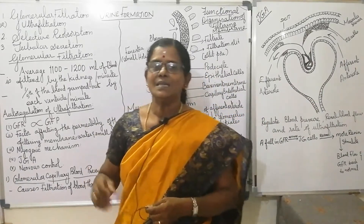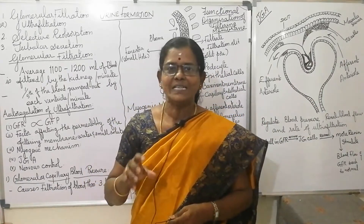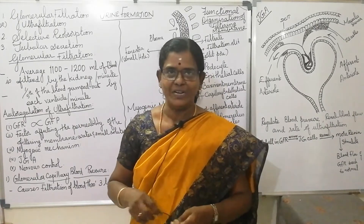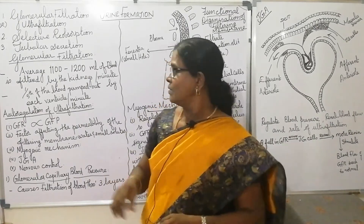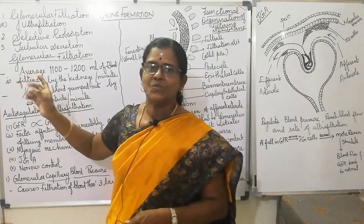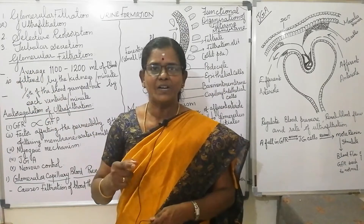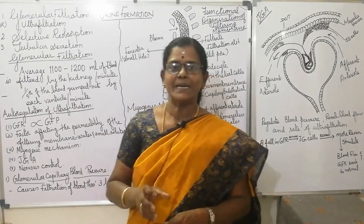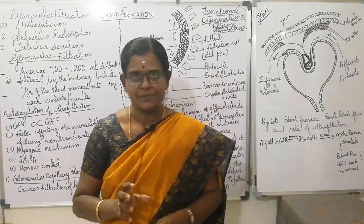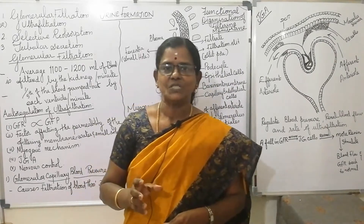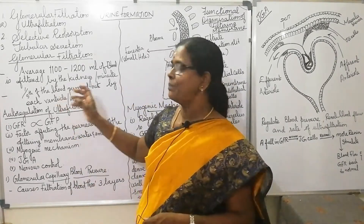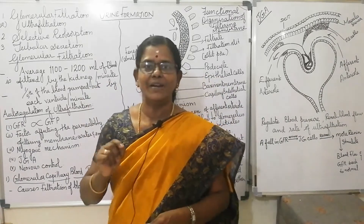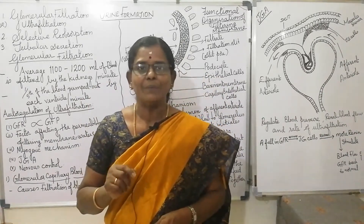In the glomerulus, filtration of the blood takes place, so it is called glomerular filtration. On an average, 1100 to 1200 ml of blood is filtered by the kidney per minute. This constitutes one fifth of the blood pumped out by each ventricle of the heart per minute.